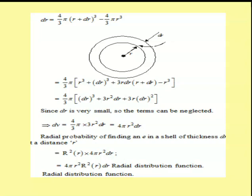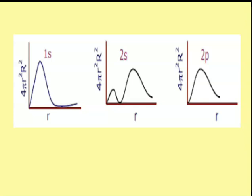So we have to multiply psi squared with this volume to calculate the radial distribution function, which comes out to be 4πr² R² dr, where R is the radial wave function along radius r. These are the graphs for 1s, 2s, and 2p — called radial probability distribution functions or simply radial probability distribution graphs.